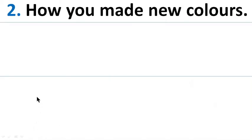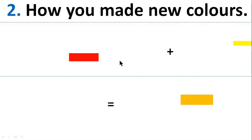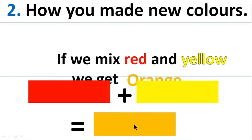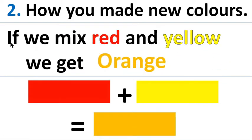How did you make a new color? Red plus yellow is equal to orange. So, if we mix red and yellow, we get orange.